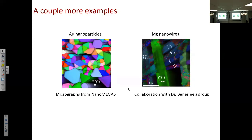In the boron carbide example, we performed nano indentation first, found the indent impression, then did FIB lift-out. There is a valid concern that cutting the sample free changes the structure — stress stored in the material will expand and relax once the boundary conditions change. This can especially affect cracking. However, we believe the plastic (permanent) deformation will remain more or less the same. This is an inherent challenge: whenever we do sample prep, we inevitably alter the specimen to some degree.